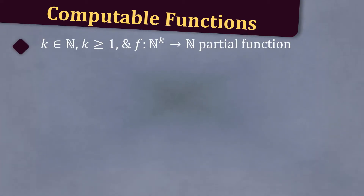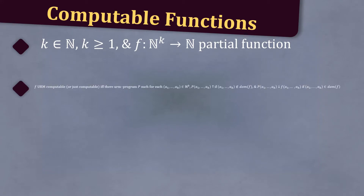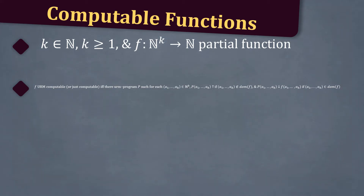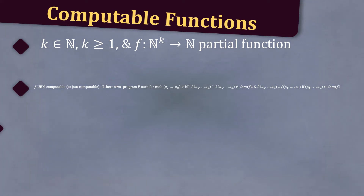Next, let's define computable functions. Let K be a natural number greater than 1, and let F from the natural numbers to the K to the natural numbers be a partial function. We say that F is URM computable, or just computable, if and only if there is a URM program P such that for each A1 to AK in the natural numbers to the K: P of A1 to AK up arrow if A1 to AK is not in the domain of F, and P of A1 to AK down arrow F of A1 to AK if A1 to AK is in the domain of F. In that case, we say that P computes F.